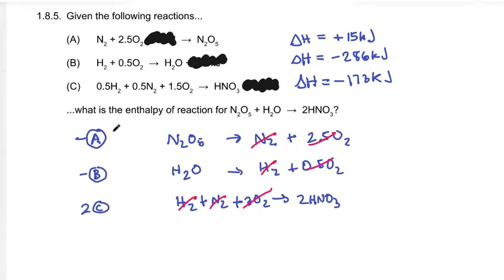And for our delta H's we flipped reaction A so minus 15. We flipped reaction B so we get positive 286 and we doubled reaction C so we double this which gives us minus 346. Is that minus 75? Let the record show I think it's minus 75 but I'll calculate it so I don't mess it up. Minus 75 kilojoules is the enthalpy of reaction.